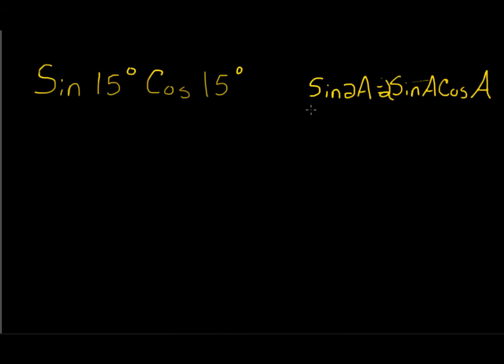So you can either divide your original equation by 2 and have sine a equals sine a multiplied by cosine a. Or you could actually plug in the 2a with the 15 degrees, and then divide that by 2 when you get to the end.